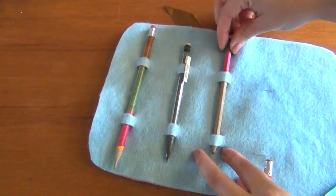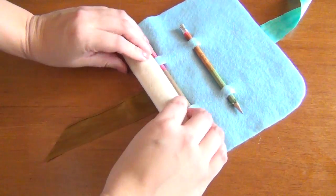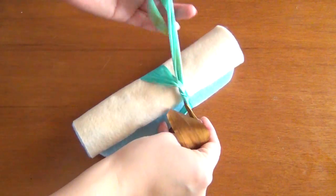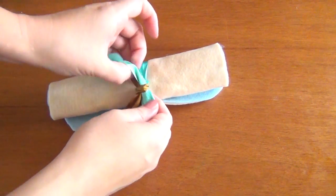Just load it up with your pencils, roll it up and tie it shut in a pretty little bow. I love how this one turned out. It's so simple and cute and of course if you wanted to hold more pencils you could always cut more slits.